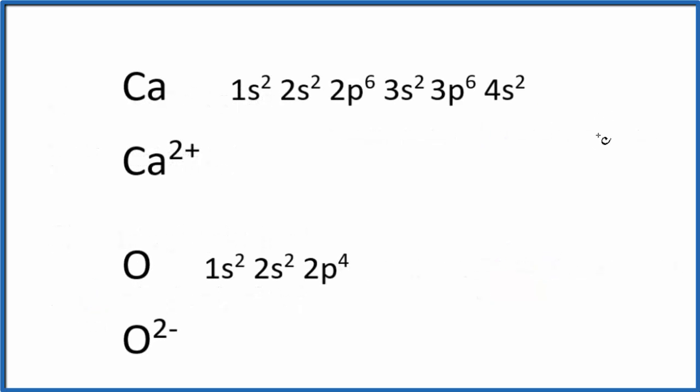So pause and write the electron configuration for the calcium cation and the oxide anion. Remember, calcium here is neutral but it'll lose electrons to become positive. Since we have a 2+ here, these are the ones that's going to lose.